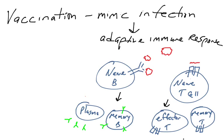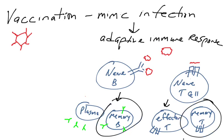In a successful vaccine, you generate these memory cells so that when the pathogen ever infects you, you have protection against it. You're going to have what's known as a secondary immune response. Years later, when exposed to the pathogen, these memory cells will bind molecules from the pathogen and will activate much quicker.